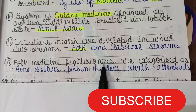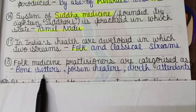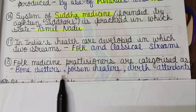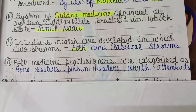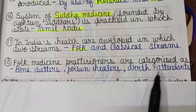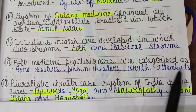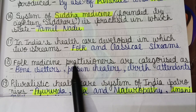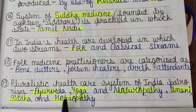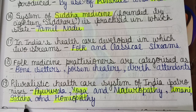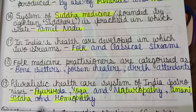In folk medicine, practitioners are categorized as bone setters, poison healers who treat snake bites, and birth attendants — all of whom are still found in our villages today. The pluralistic healthcare system of India includes Ayurveda, yoga and naturopathy, Yunani, Siddha, and homeopathy.